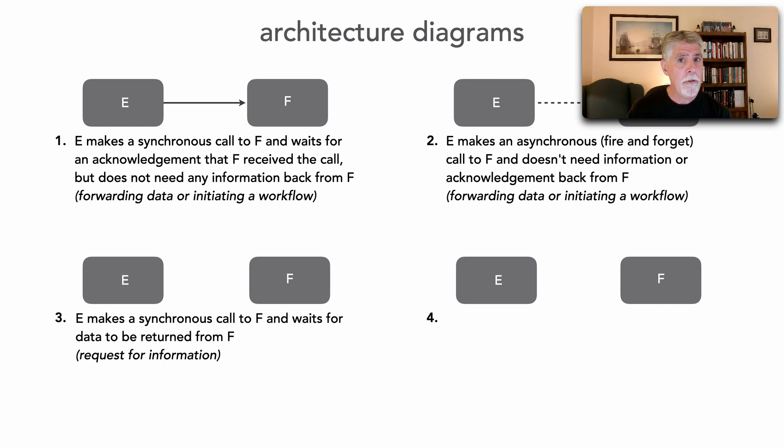So what I'm going to show here, because it's synchronous, is I'm going to show a unidirectional line, solid, initiated from E to F with the hand up there to say, I am initiating a request to F, but I am expecting data back, and I will wait for that data.